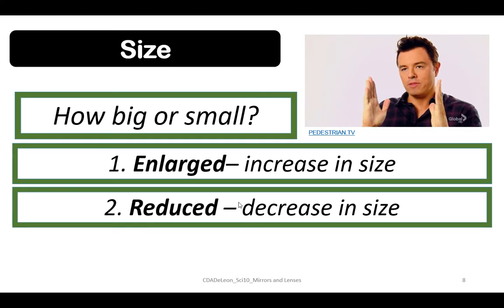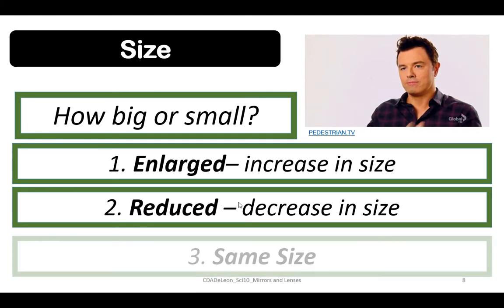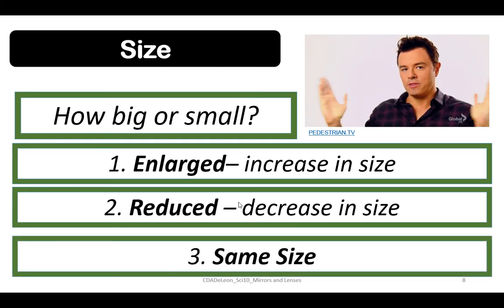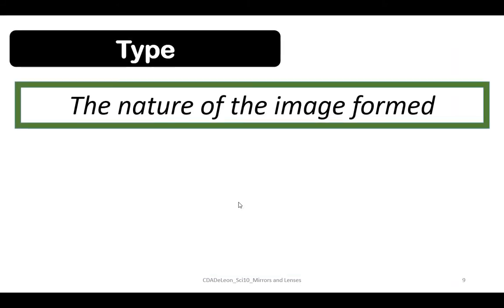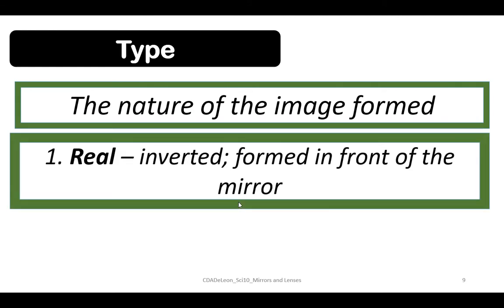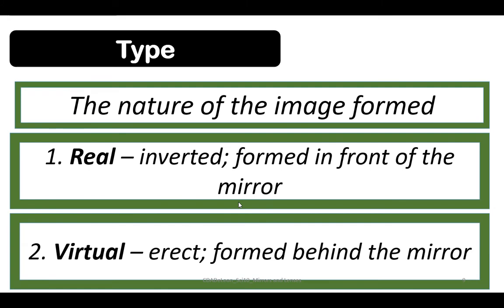Last one is type. Type is the nature of the image formed. We have two types: first is real, which is inverted and formed in front of the mirror, and virtual, which is erect and being formed behind the mirror.